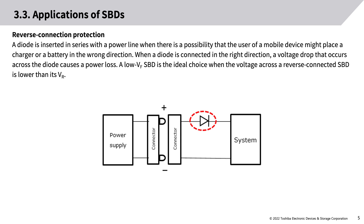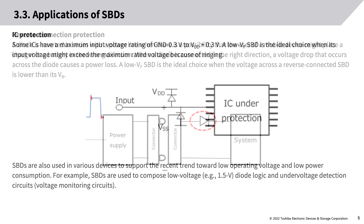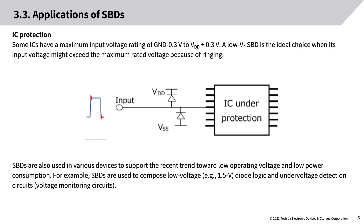For reverse connection protection, a diode is inserted in series with the power line when there is a possibility that the user of a mobile device might place a charger or battery in the wrong direction. When a diode is connected in the right direction, a voltage drop across it causes a power loss. A low VF SBD is the ideal choice when the voltage across a reverse-connected SBD is lower than its VR.